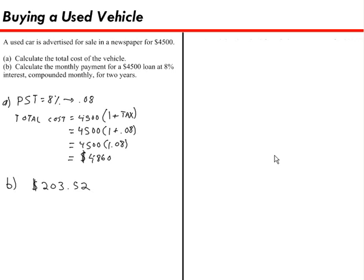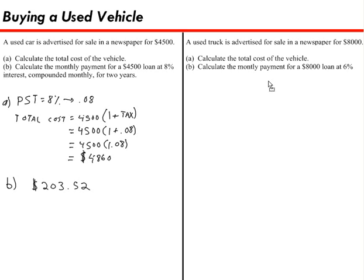Now let's give you a problem that you can practice. Help this fella out who's trying to buy a truck and see what it's going to cost him per month. A used truck is advertised for sale in a newspaper for $8,000. In part A, calculate the total cost of the vehicle. And in part B, calculate the monthly payment for an $8,000 loan at 6% interest compounded monthly for three years. All right, so try that one using the steps I showed you on the left and I'll post the answer when you're ready.